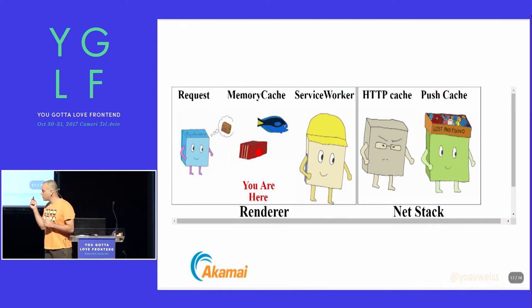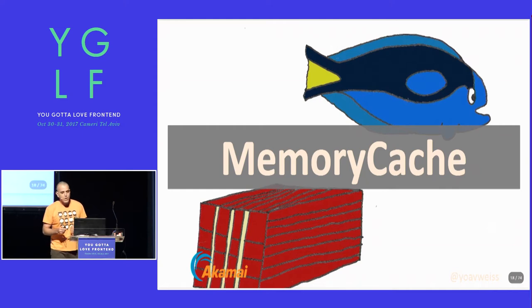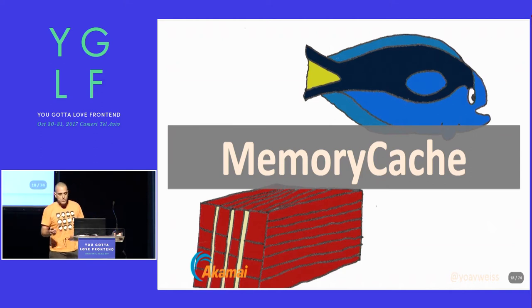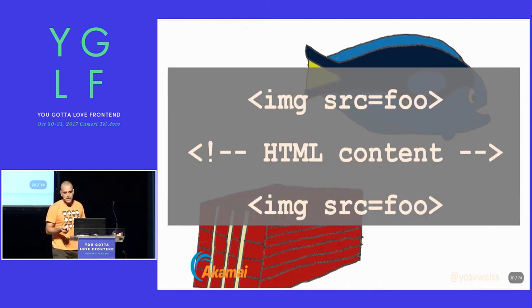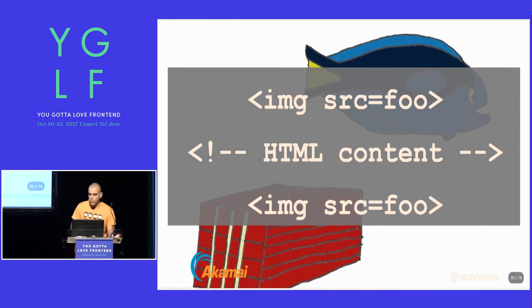The first place to look for a resource is in the closest cache: the memory cache. The memory cache — or as it should be called, the short-term memory cache — is part of the renderer and keeps in RAM resources that the renderer has seen before, but disappears as soon as the renderer is destroyed because the user clicked away. If the resources were previously loaded on that page or a previous page — by the preloader (the browser's speculative parser), by an explicit preload link, or by multiple tags referring to the same resource — the resource would be in the memory cache, and the request can just use that.